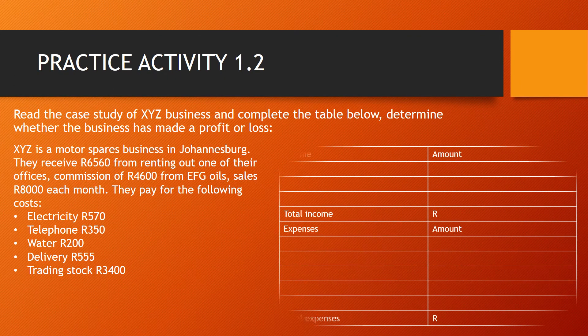Practice Activity 1.2 — read the case study of XYZ business and complete the table below to determine whether the business has made a profit or a loss. XYZ is a motor spares business in Johannesburg. They receive 6,560 rand from renting out one of their offices, commission of 4,600 rand from EFG Oils, and sales of 8,000 rand each month. They pay for electricity 570 rand, telephone 350 rand, water 200 rand, delivery 555 rand, and trading stock 3,400 rand. Complete the table on the right-hand side, then look at your total income and total expenses to determine whether the business has made a profit or a loss.